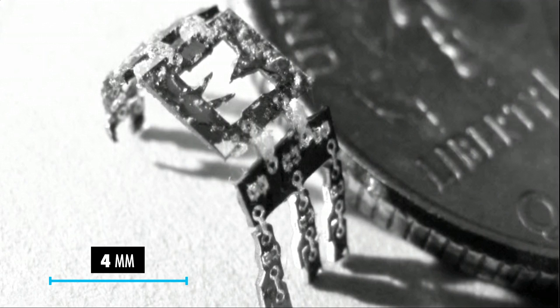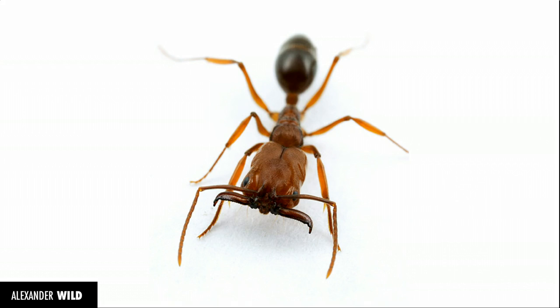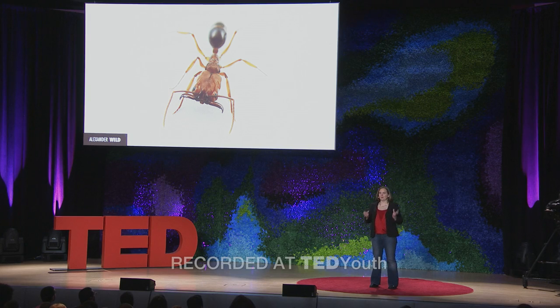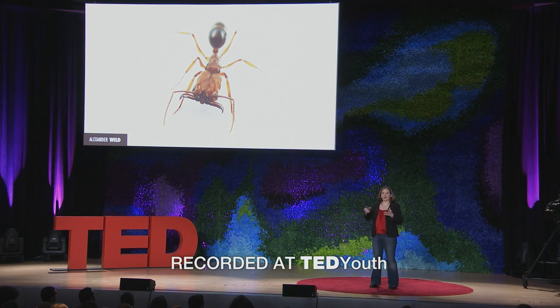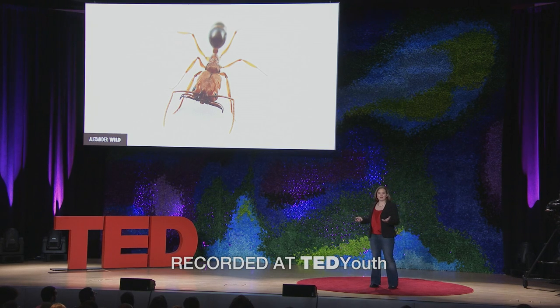My students and I work on very tiny robots. You can think of these as robotic versions of something that you're all very familiar with: an ant. We all know that ants and other insects at this size scale can do some pretty incredible things. We've all seen a group of ants carting off your potato chip at a picnic, for example.